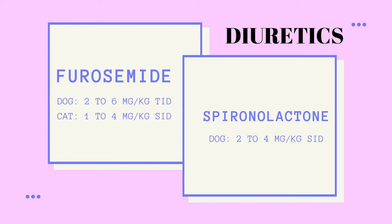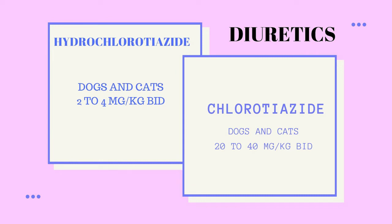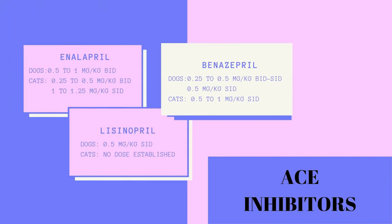Spironolactone also seems to not offer any benefits in the treatment of feline hypertrophic cardiomyopathy. Chlorothiazide and hydrochlorothiazide are diuretics that are sometimes used in conjunction with furosemide for refractory heart failure cases. The adverse side effects of these two drugs are usually related to excessive fluid and electrolyte losses.